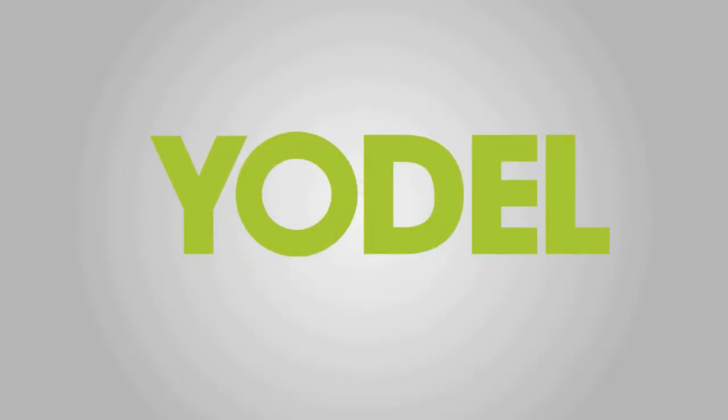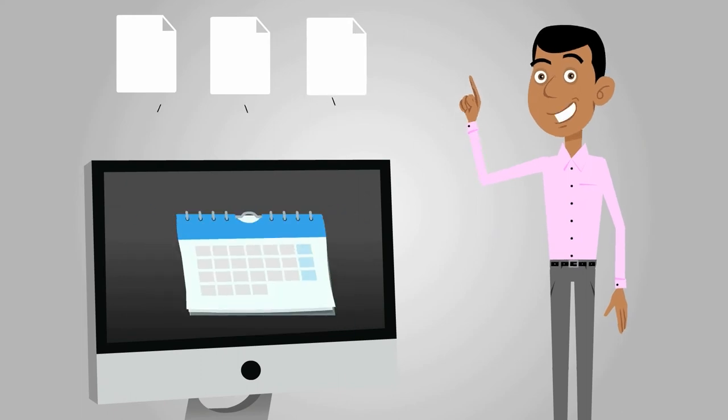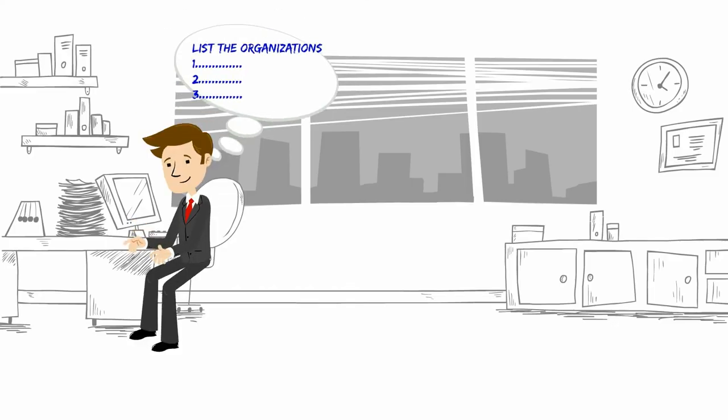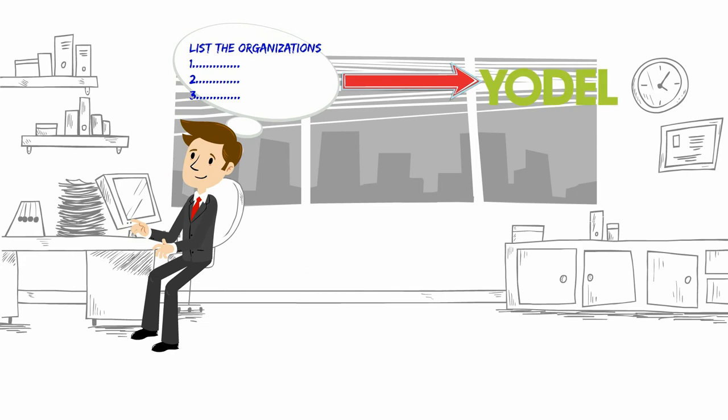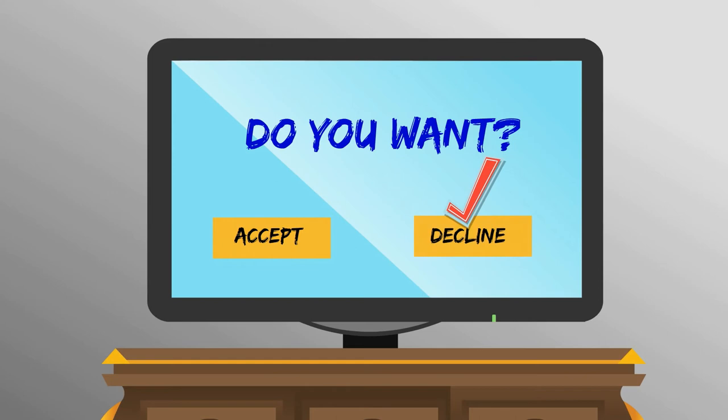Meet Yodel. Yodel puts all your important events into the electronic calendar of choice for you. Simply list the organizations you want to follow, and Yodel sends them to your electronic calendar. If you don't want an event, simply don't accept it.